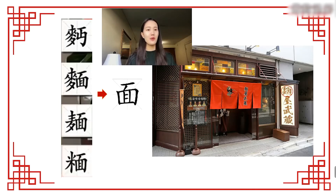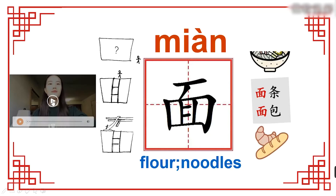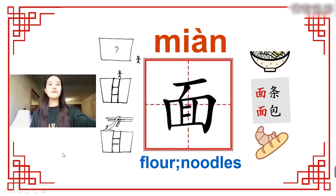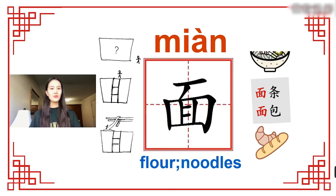We can even see a famous noodles shop in Japan using this character. Now, how do we memorize how to write this character 面? I have a good idea.